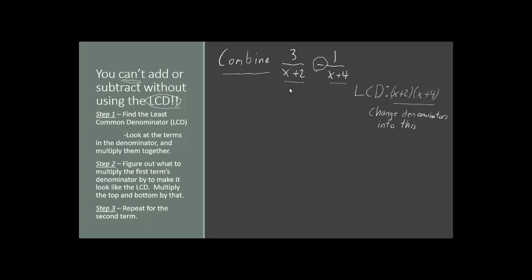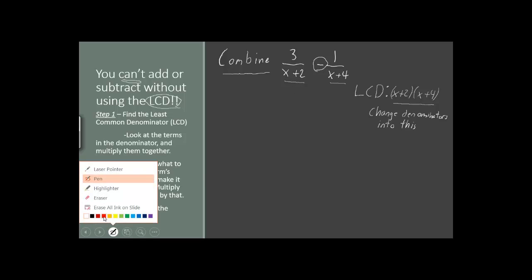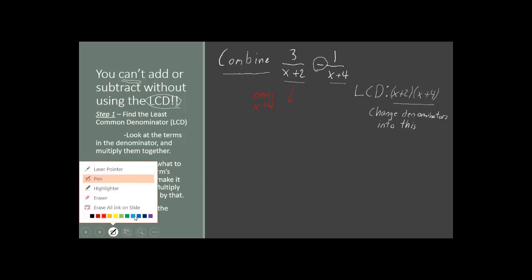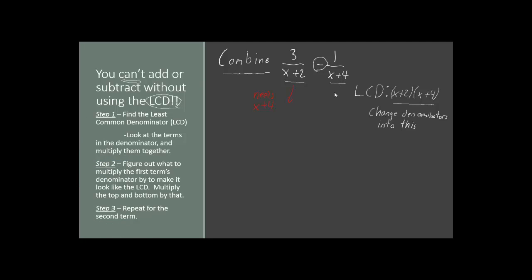The question is: what do we have to multiply our first denominator by in order to make it look like the least common denominator? We have (x plus 2) already, but the LCD also has an (x plus 4), so it needs (x plus 4). Now we look to our second fraction — it already has (x plus 4), so it needs to have (x plus 2) as well.